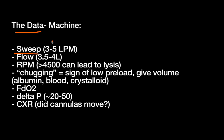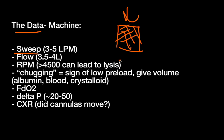Sweep refers to how much gas is flowing into the membrane oxygenator per minute, measured in liters per minute. A typical value is around three to five liters per minute, though the machine can range from near zero up to around eight to ten. Sweep is really related to ventilation and CO2 clearance. If your arterial PCO2 is too high, you can turn up the sweep to improve that. As the patient gets better, you start turning down the sweep and providing less support.